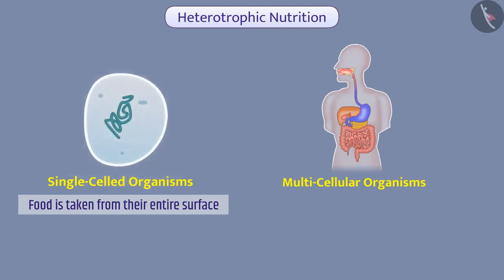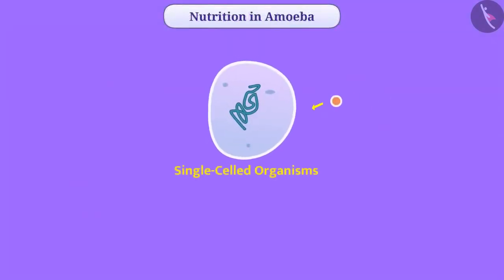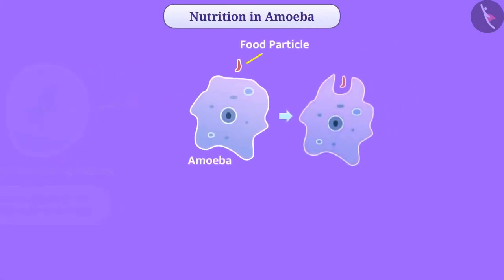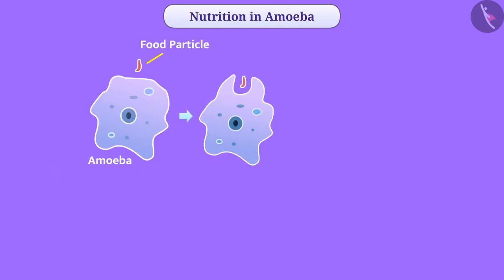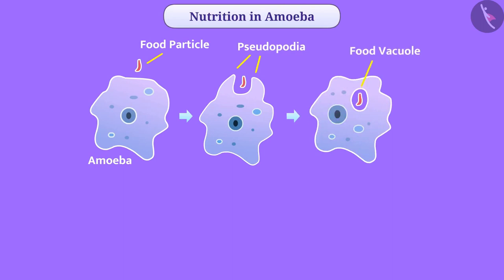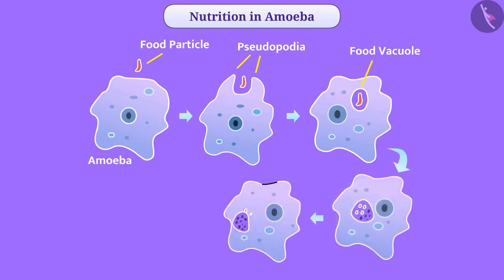Let us understand amoeba's method of consuming food. As in single-celled organisms, food is taken from their entire surface. Amoeba surrounds food particles with temporary finger-like extensions of the cell surface called pseudopodia. After this, all extensions fuse and form a food vacuole. Inside, the complex food is broken down into simpler substances. The remaining undigested material moves towards the cell surface and is removed from the body.